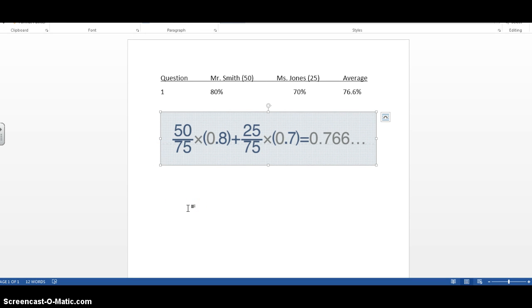This is a quick tutorial on how to calculate the curriculum course assessment summary. In my example, Mr. Smith and Ms. Jones teach the same course. Mr. Smith has 50 students in his class, Ms. Jones has 25 students in her class, for a total of 75 children taking the same course. On question number one,